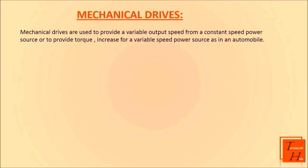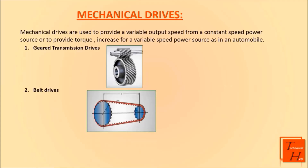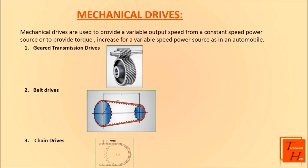Mechanical drives are used to provide a variable output speed from a constant speed power source, or to provide torque increase for a variable speed power source, as in an automobile. I will be covering three types of mechanical drives: first is gear transmission drives, which provide specific fixed ratios; second is belt drives, which provide flexibility in the positioning of the motor; third is chain drives, which provide infinitely variable speeds.